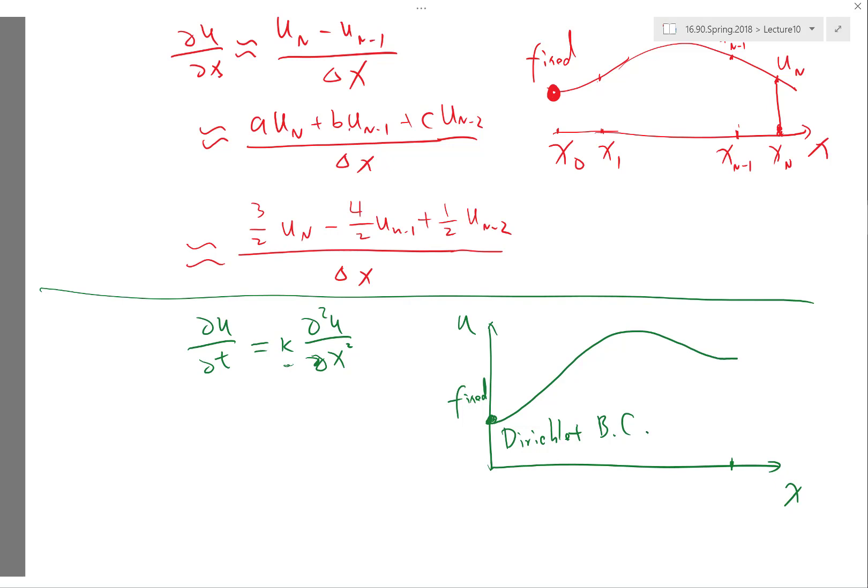But there is a different type of boundary condition you can apply. It's called the Neumann boundary condition. What else was named after Neumann? Oh, that's von Neumann. That's actually a different guy.